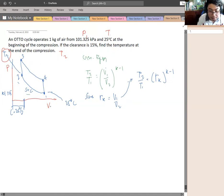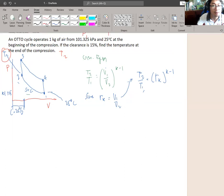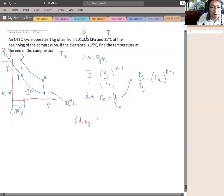So in our problem, we have the value of T1, but we don't have the value of RK. First, we will solve for the RK. Solving for RK. We have the clearance in the given, so we can easily find the RK. We have the formula of RK equals to 1 plus C over C.